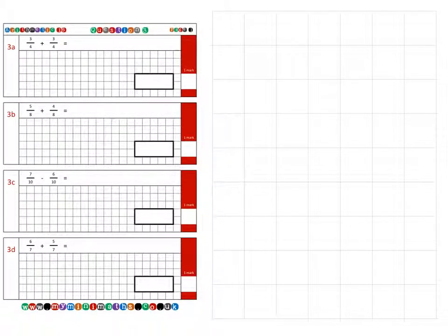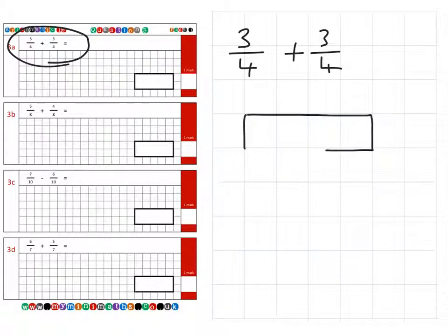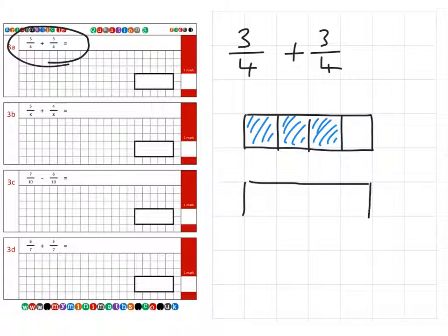For the first question, 3a, we're going to be looking at adding 3 quarters and another 3 quarters together. So the sum of 3 quarters and 3 quarters. If I take the first 3 quarters and I color those 3 out of the 4 to make 3 quarters, and then there's a second 3 quarters to add.